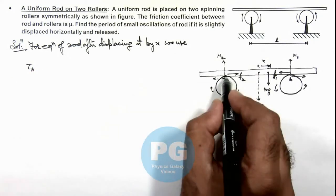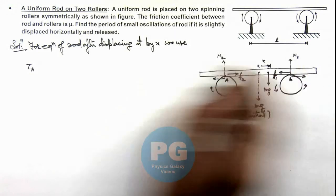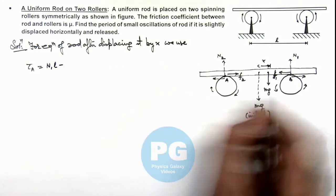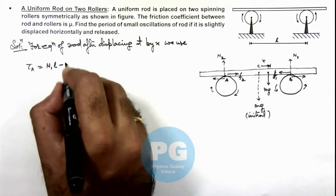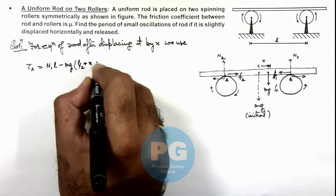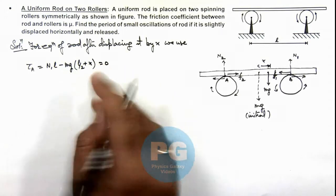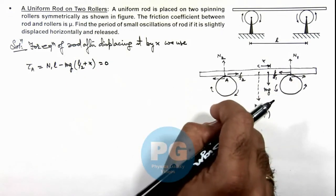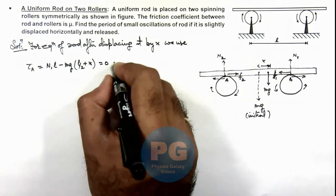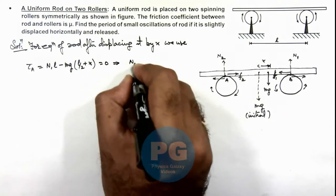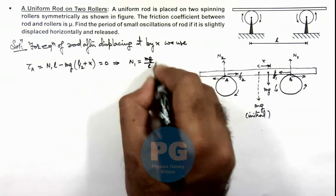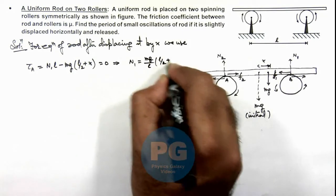About point A torque is due to N₁, which is N₁L minus the weight which is mg multiplied by (L/2 + x), and this should be equal to zero because the rod is in equilibrium for its rotational motion. So this implies we get the value of N₁ directly as (mg/L) multiplied by (L/2 + x).